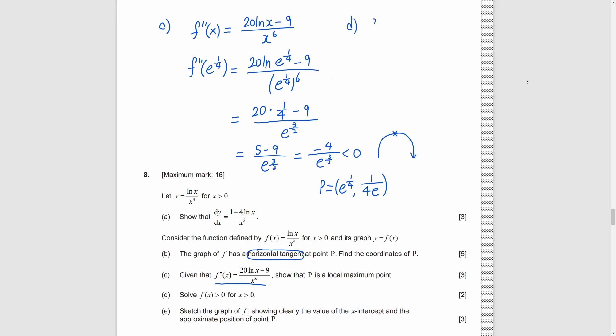Part C, we set f(x) to be greater than 0. As x to the power 4 must be positive, we can cancel it. And we get natural log x to be greater than 0. That means, x must be greater than 1.